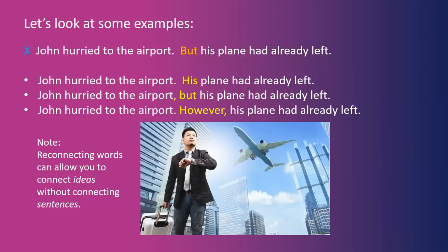How can we fix this? Option one: "John hurried to the airport. His plane had already left." — two separate sentences. Option two: "John hurried to the airport, but his plane had already left." — one sentence combined with a comma and "but." Option three: "John hurried to the airport. However, his plane had already left." The word "however" lets you start a new sentence after the period, connecting the idea but not the sentences. Reconnecting words allow you to start a new sentence and keep the thought going.